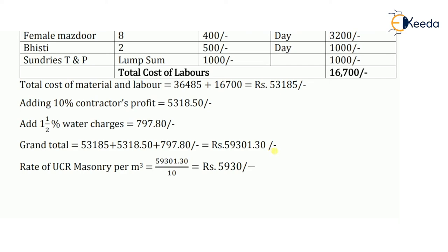This value is for 10 m³ of work. To calculate the rate of UCR masonry per meter cube, we divide by the quantity of work, which we assumed as 10 m³. Dividing 59,301 rupees 30 paise by 10 m³ gives 5,930 rupees per meter cube. This is the rate of uncoursed rubble masonry in cement mortar at 1:6 proportion per meter cube.